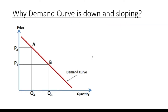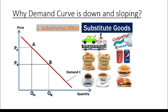Economists point out three reasons for this consumer behavior. The first one is the substitution effect. This is based on the idea that as prices rise, consumers will replace more expensive items or services with cheaper substitutes or alternatives, assuming income remains the same. As prices increase for a good or service, we start to think of other products or choices that can satisfy us at a relatively lower price.